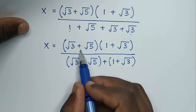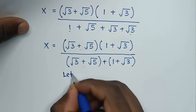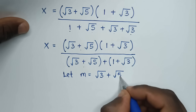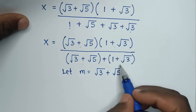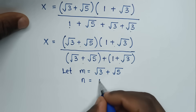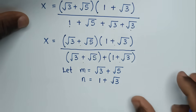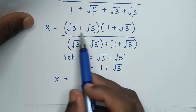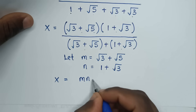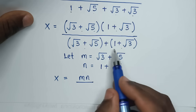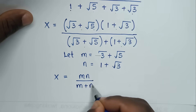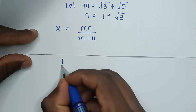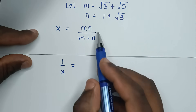Now, square root of 3 plus square root of 5 is common, so we let m equal square root of 3 plus square root of 5, and we let n equal 1 plus square root of 3. Then our expression becomes x is equal to m times n over m plus n.